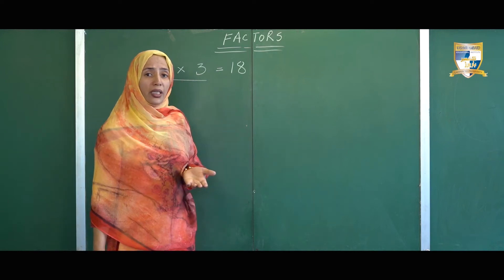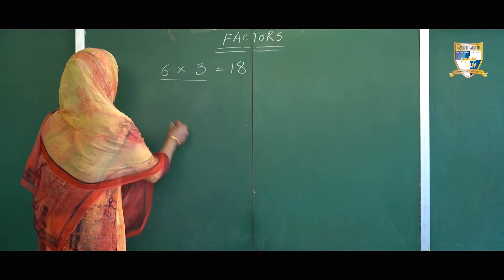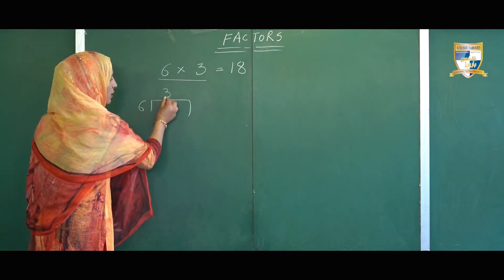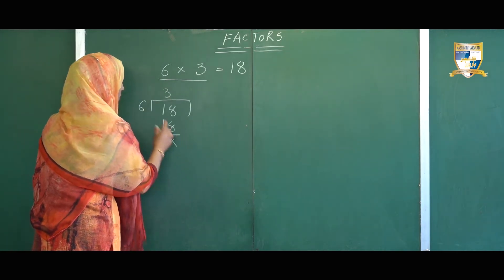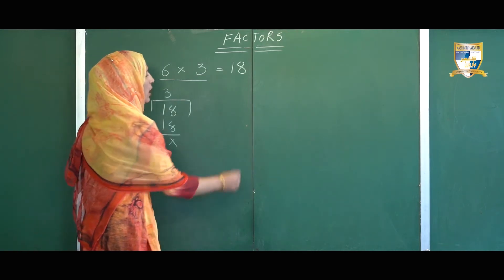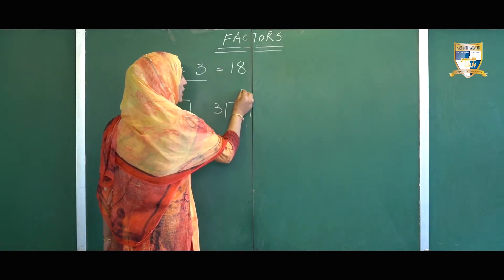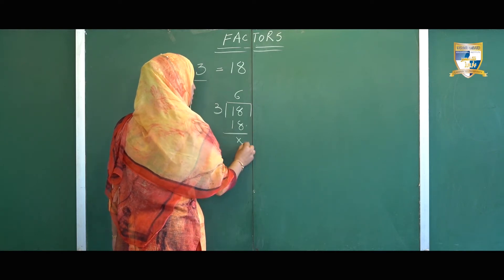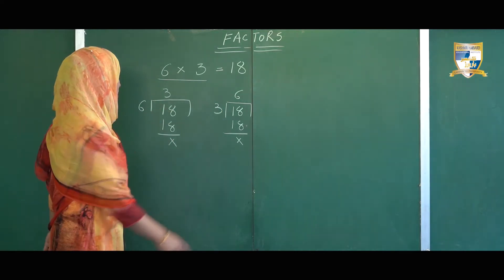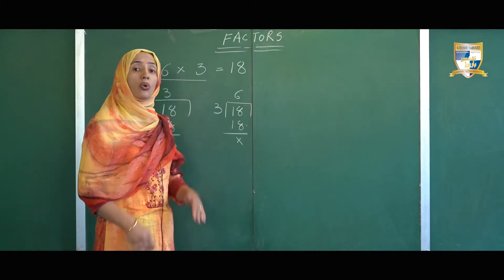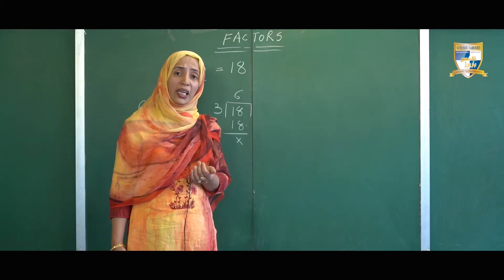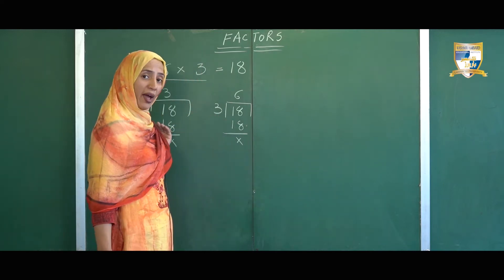Why are these two numbers called the factors of 18? To understand it better, let's divide 18 by the first number, 6. Six 3s are 18. Here you could see 6 goes evenly 3 times into 18, that means 6 is the exact divisor of number 18. Now I'll divide 18 by 3: three 6s are 18. Here you could see 3 goes evenly into 18 six times. In both cases the remainder is 0, that means 6 and 3 are the exact divisors of number 18.